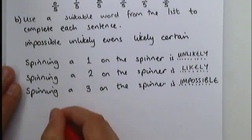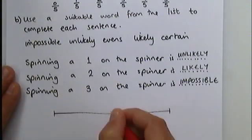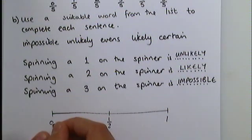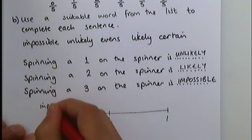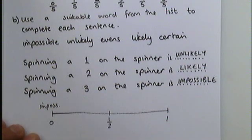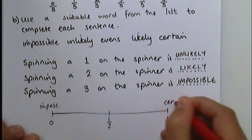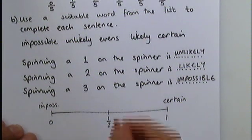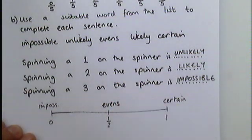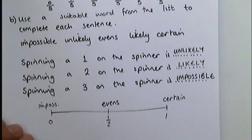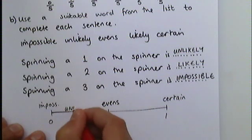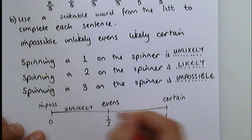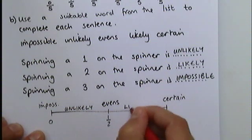It's really important that you get this idea that if something is impossible, we give it the number zero. If something is certain, we give it the number one, or a hundred percent. It's going to happen. If something is evens, that's a fifty percent chance of happening. And anything in this zone here is unlikely. And anything in this zone here, more than evens, is likely.